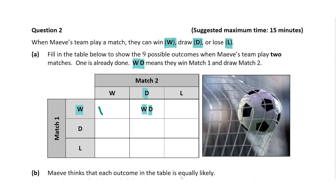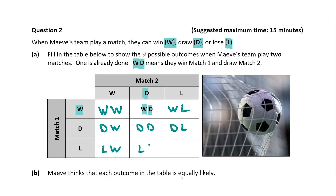So continuing to fill this out: they could win match one and win match two, win match one and draw match two (already done), or win the first and lose the second. They could draw the first and win the second, draw both, draw the first and lose the second, lose the first and win the second, lose the first and draw the second, or lose both. So that's our table done.